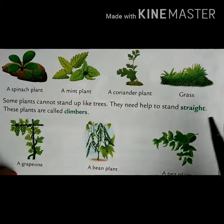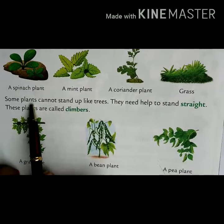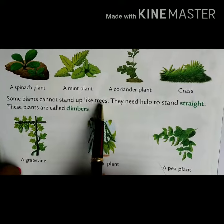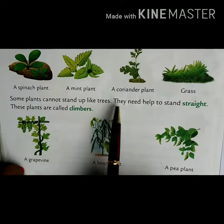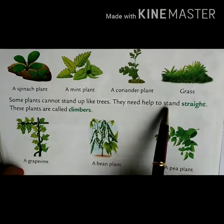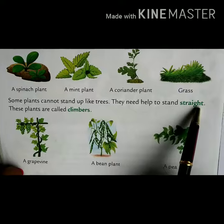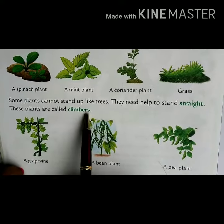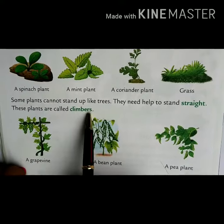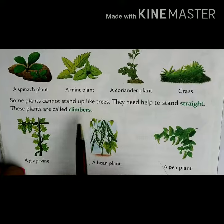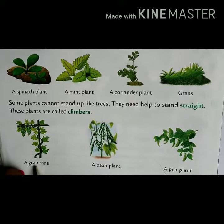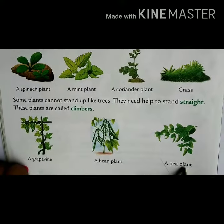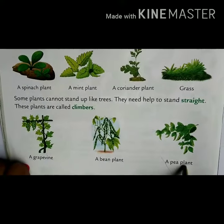Some plants cannot stand up like trees — they need help to stand straight. These plants are called climbers. Examples are grapevine, bee plant, pea plant, etc.